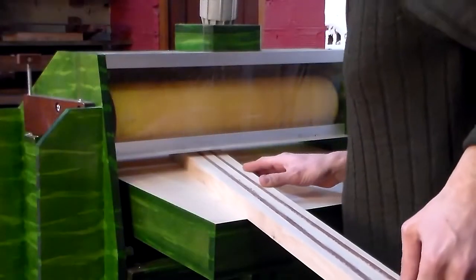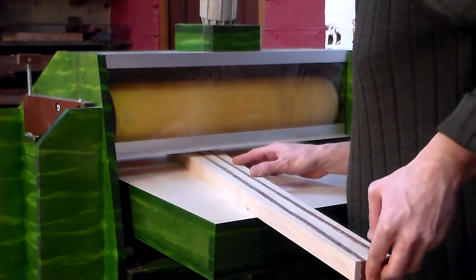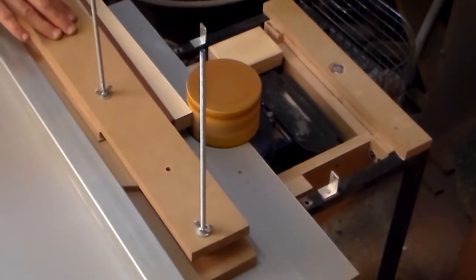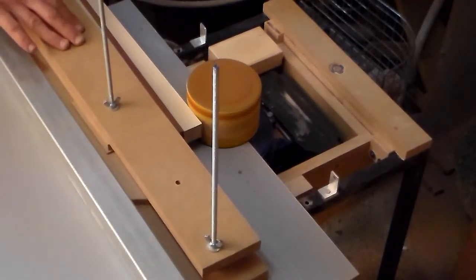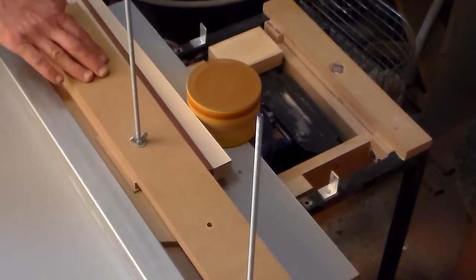And now back to the thickness sander to get everything flat and even. I also need the sides to have the perfect taper, so I am using this edge sander, another machine made by me. And with the help of a jig, I can hold the neck in the angle that I want.